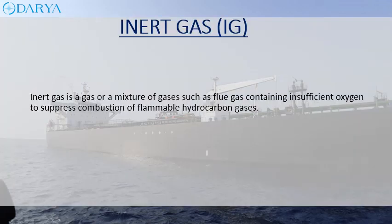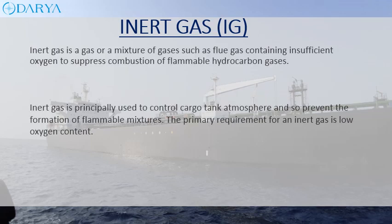Inert gas is a gas or a mixture of gases, such as flue gas, containing insufficient oxygen to suppress combustion of flammable hydrocarbon gases. Inert gas is principally used to control cargo tank atmospheres and prevent the formation of flammable mixtures. The primary requirement for an inert gas is low oxygen content.